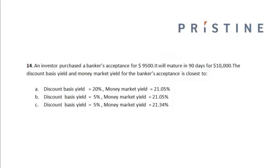An investor purchased a banker's acceptance for $9,500. It will mature in 20 days for $10,000. The discount basis yield and the money market yield for the banker's acceptance is closest to: